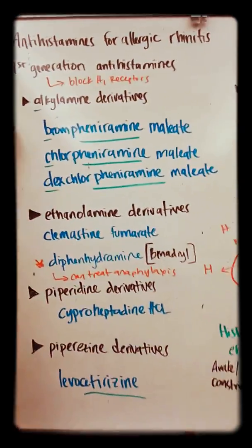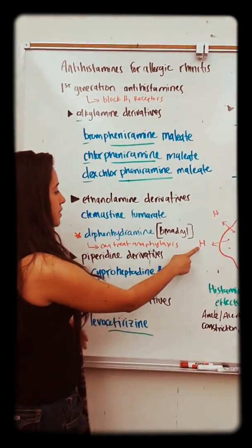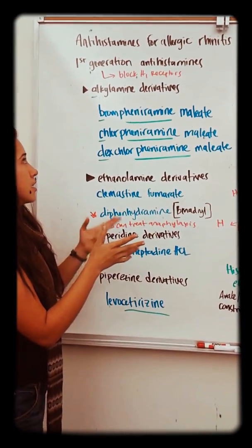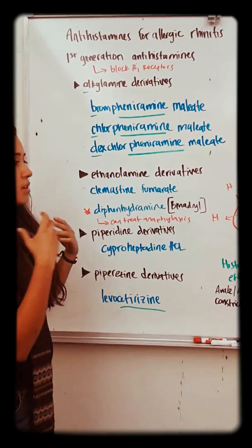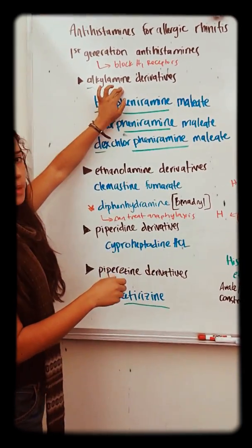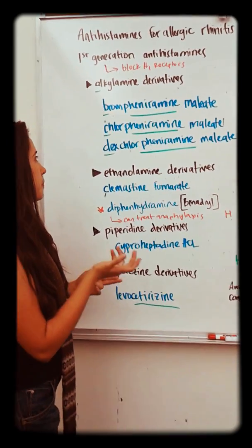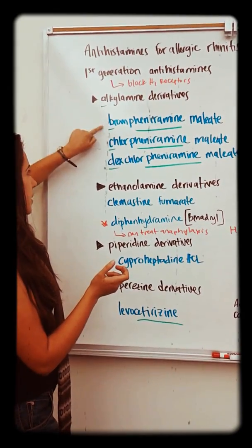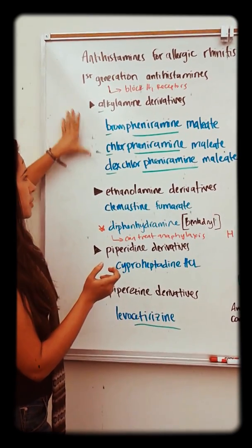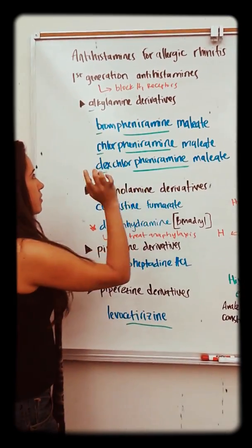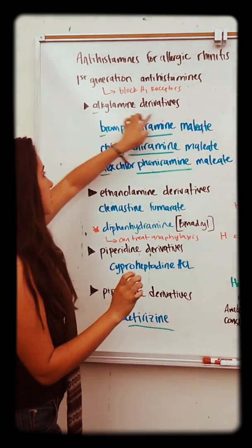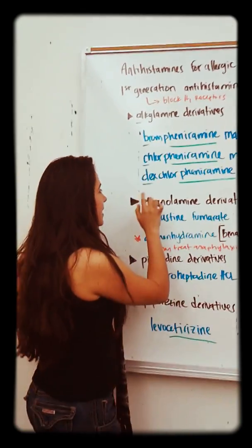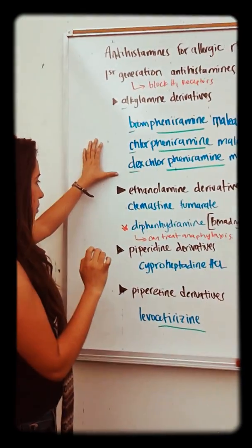For allergic rhinitis, we have first-generation antihistamines. What they do — like all antihistamines — is block histamine receptors, preventing the allergic reaction. The alkylamine derivatives are a good class to remember: they go A, B, C, D — brompheniramine, chlorpheniramine, dexchlorpheniramine — and they all end in '-pheniramine.'